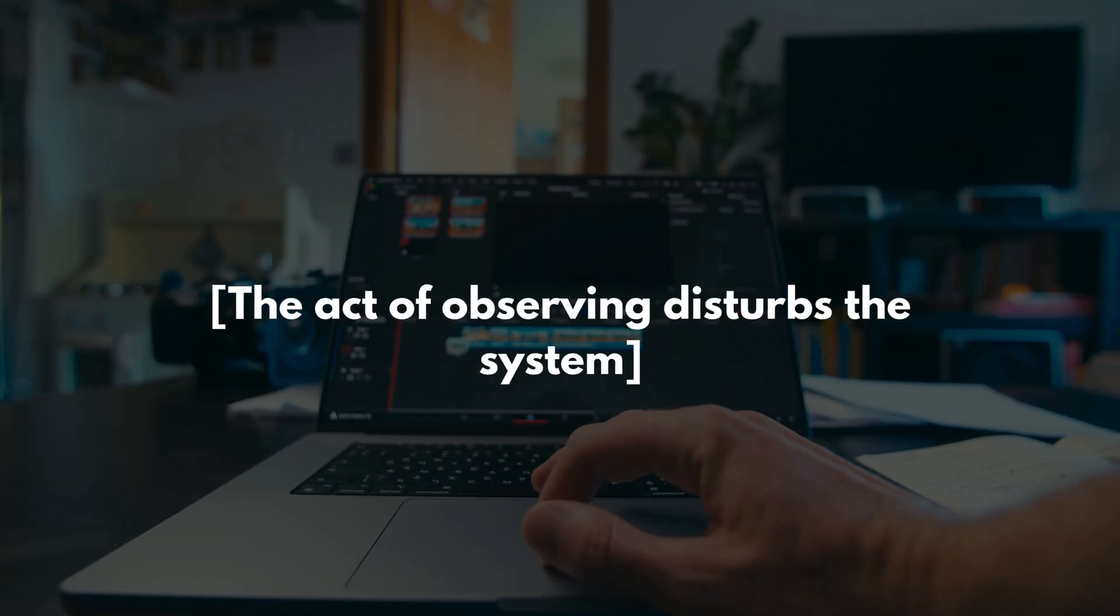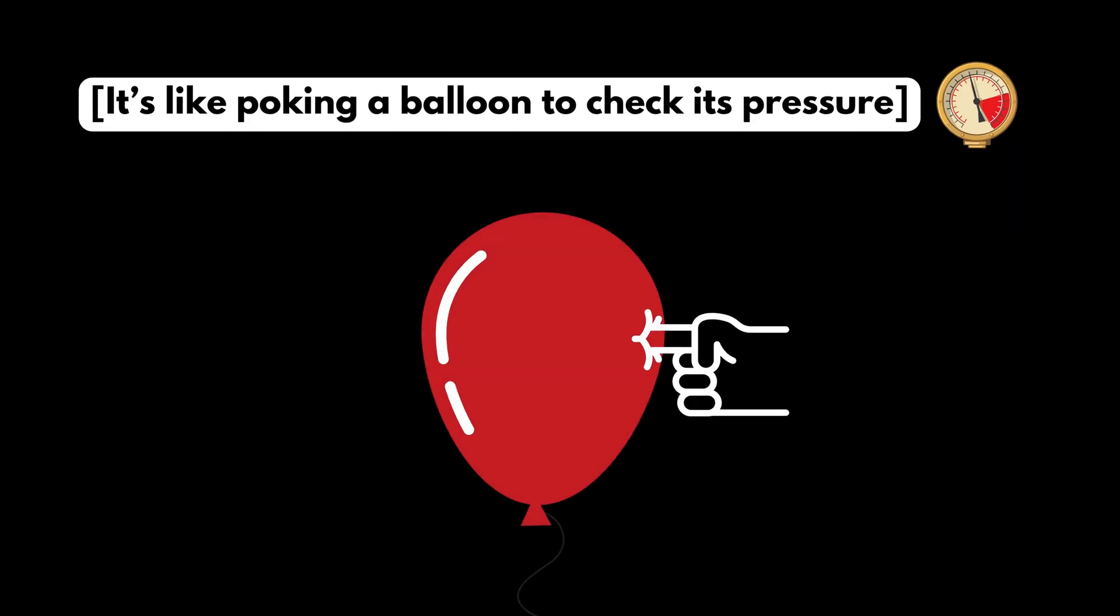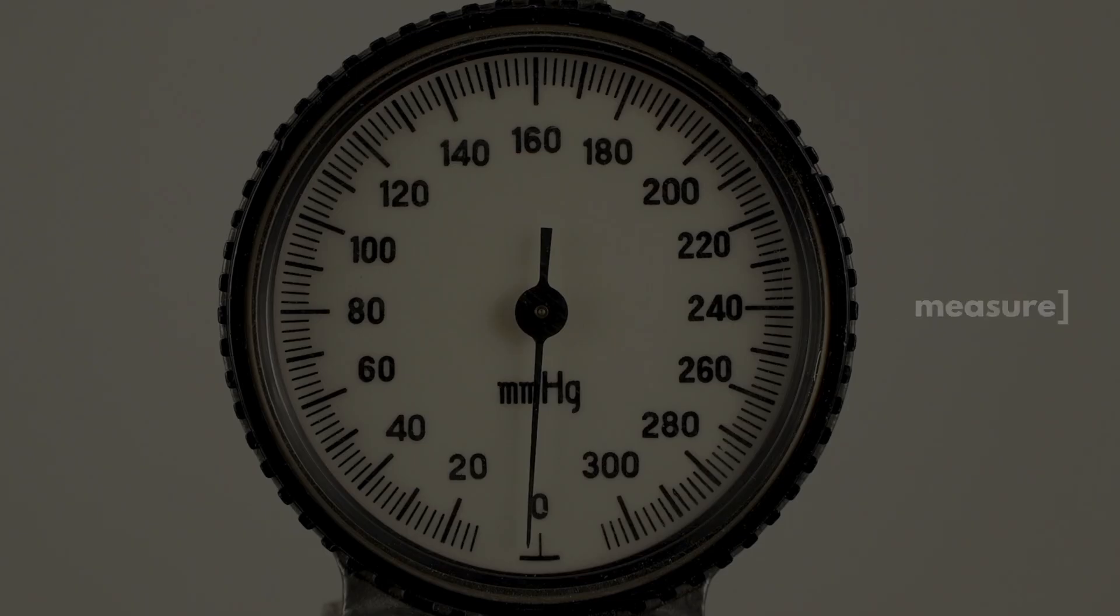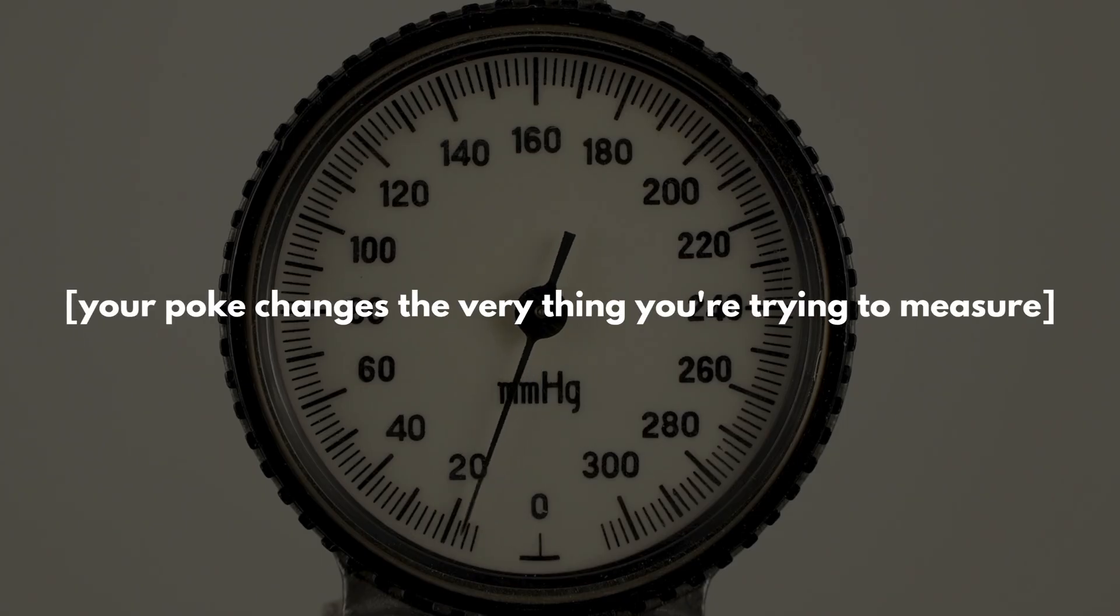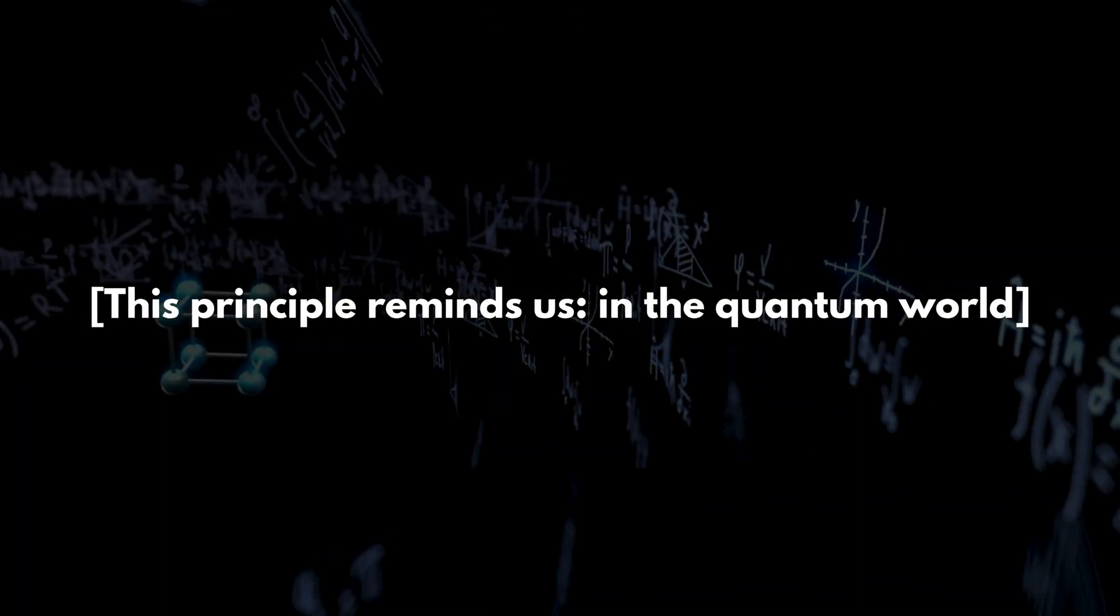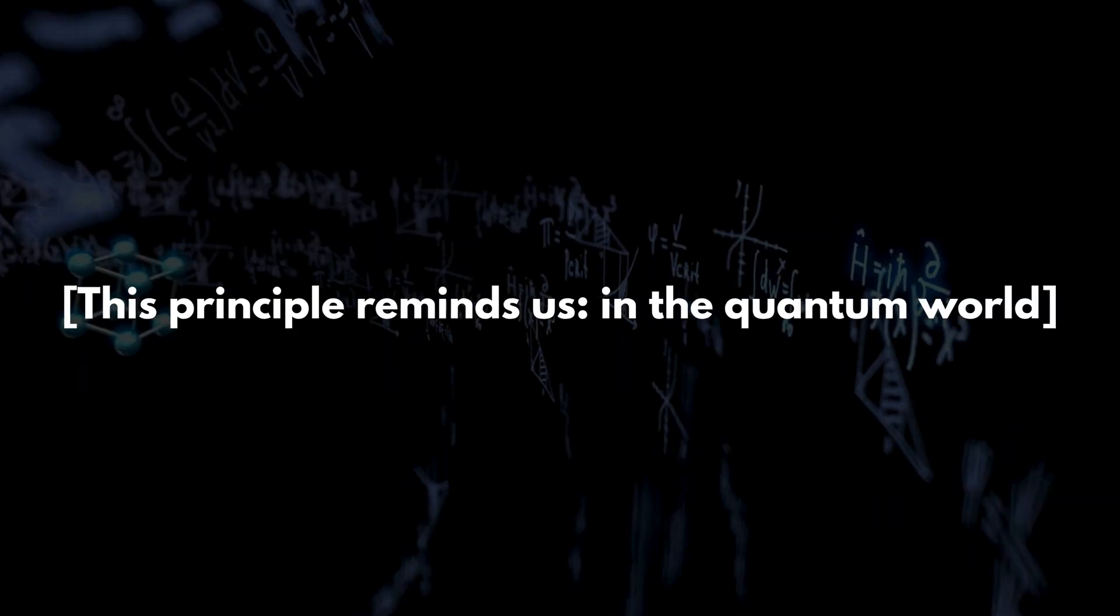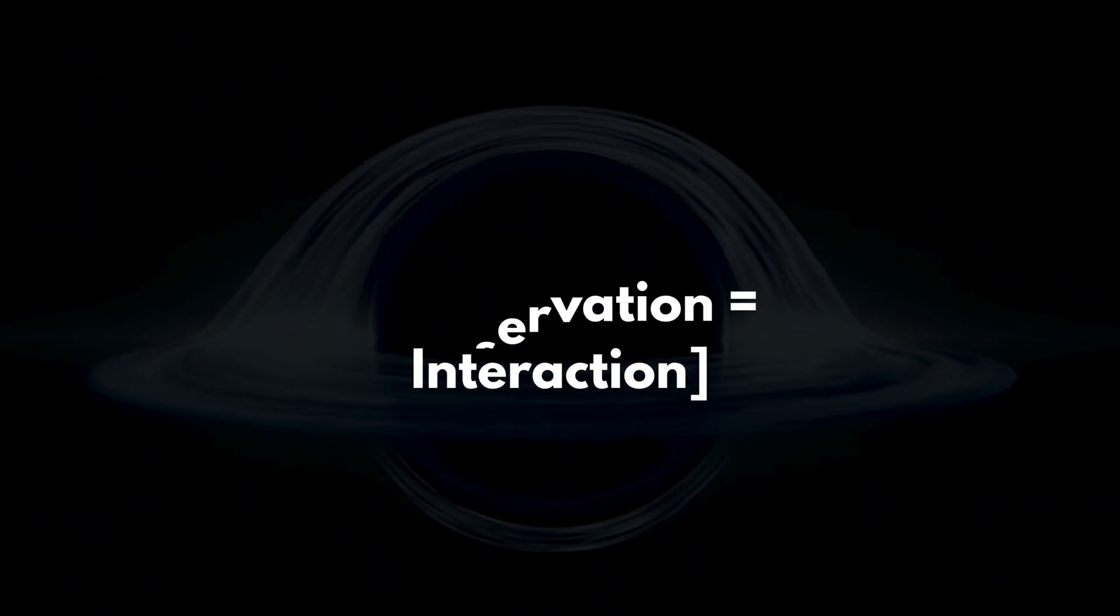Imagine trying to take a perfect photo of a moving fan blade. You can freeze the blade but blur the speed or track the speed and lose the sharp image. The act of observing disturbs the system. It's like poking a balloon to check its pressure. Your poke changes the very thing you're trying to measure. This principle reminds us, in the quantum world, the act of measuring isn't passive. It's invasive.